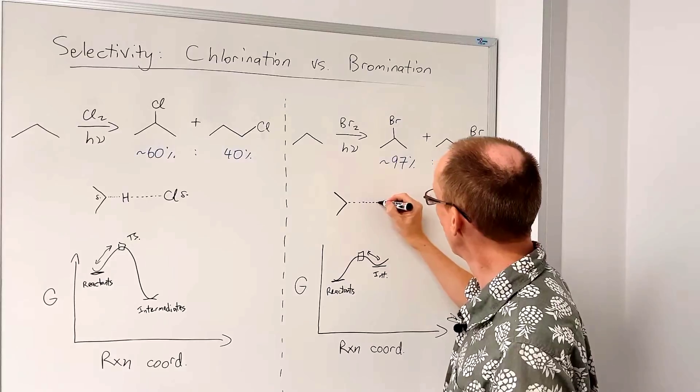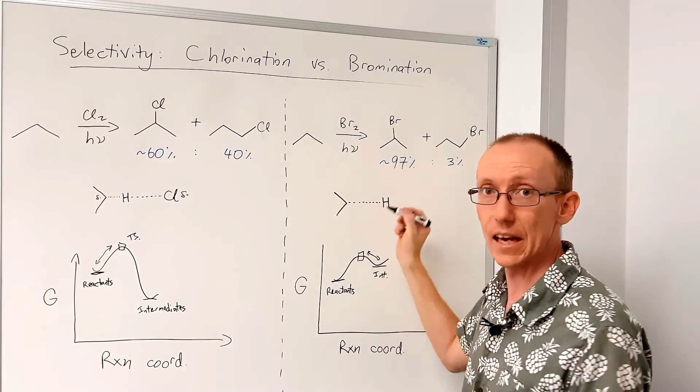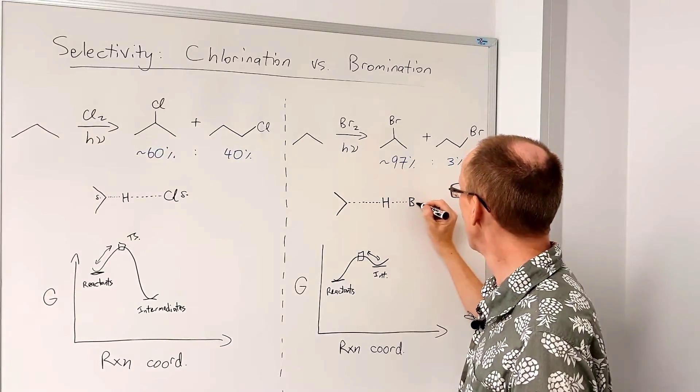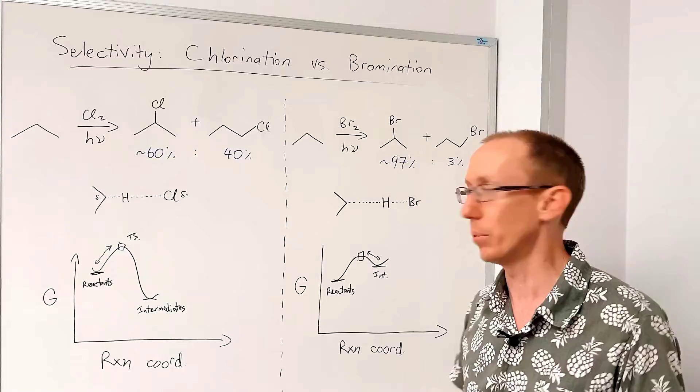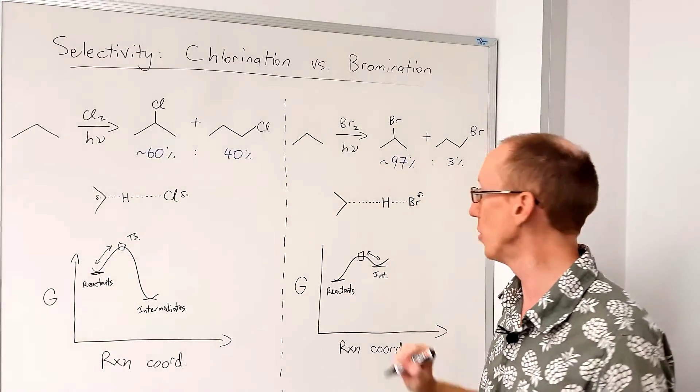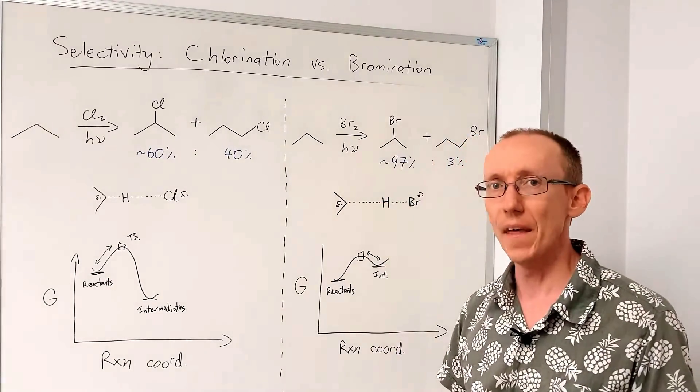So we're going to have a very long carbon-hydrogen bond that is exaggerated, and then quite a short and very developed hydrogen-bromine bond. We're going to have some partial radical character on the bromine. We have a very substantial partial radical character on that carbon.